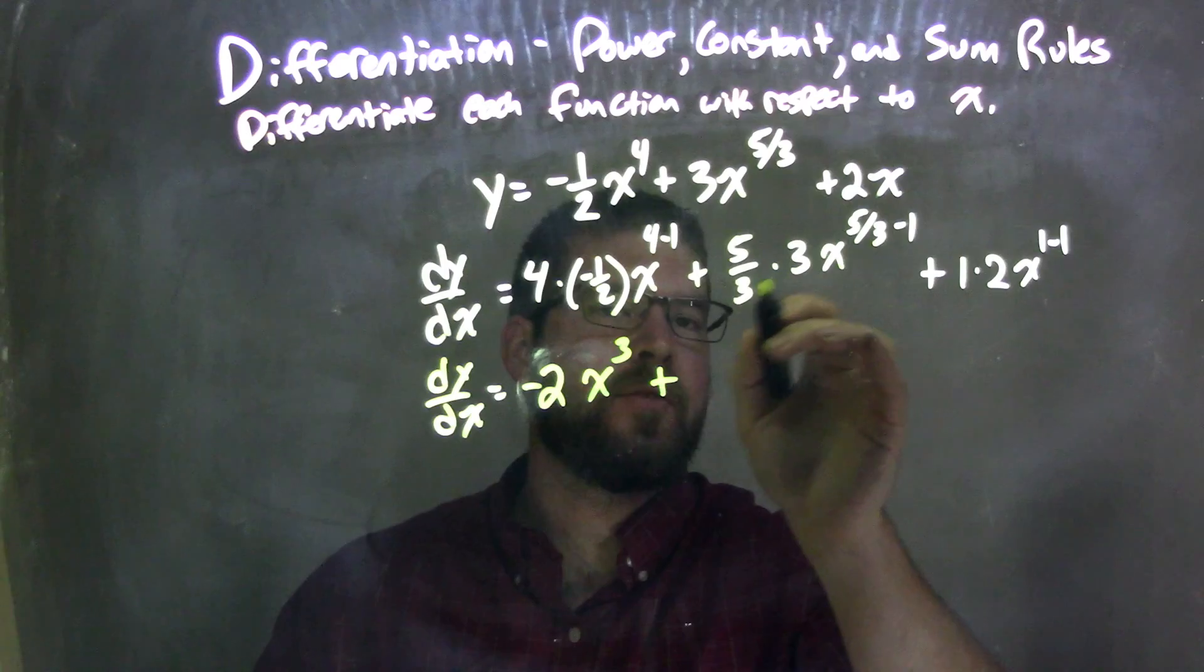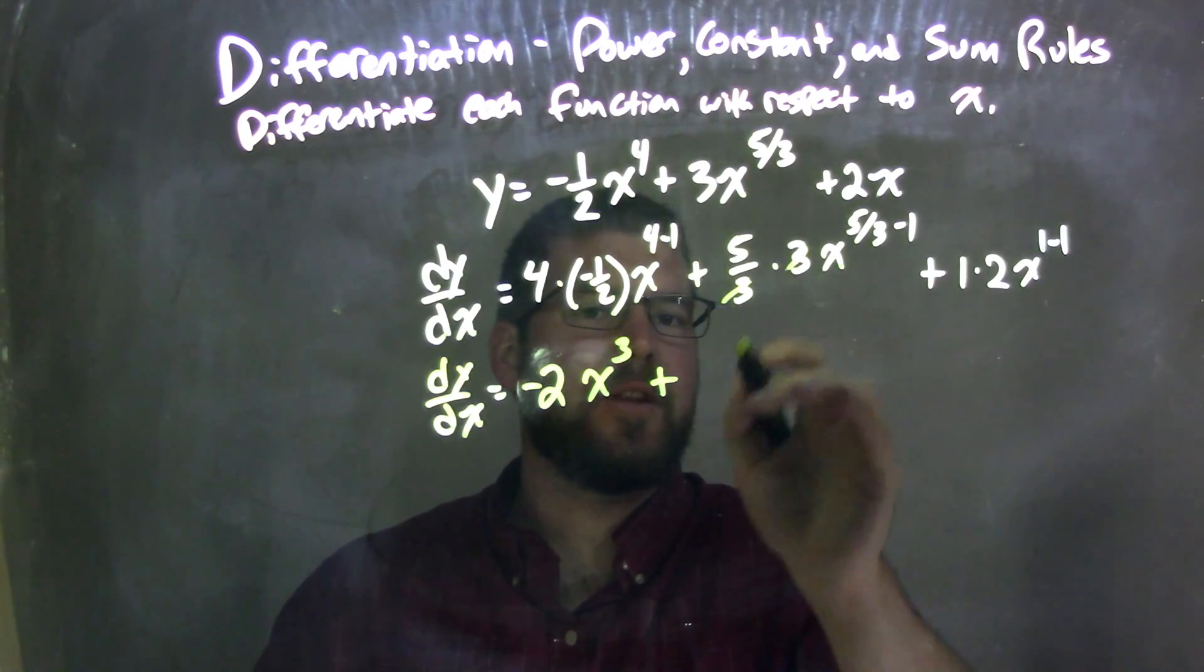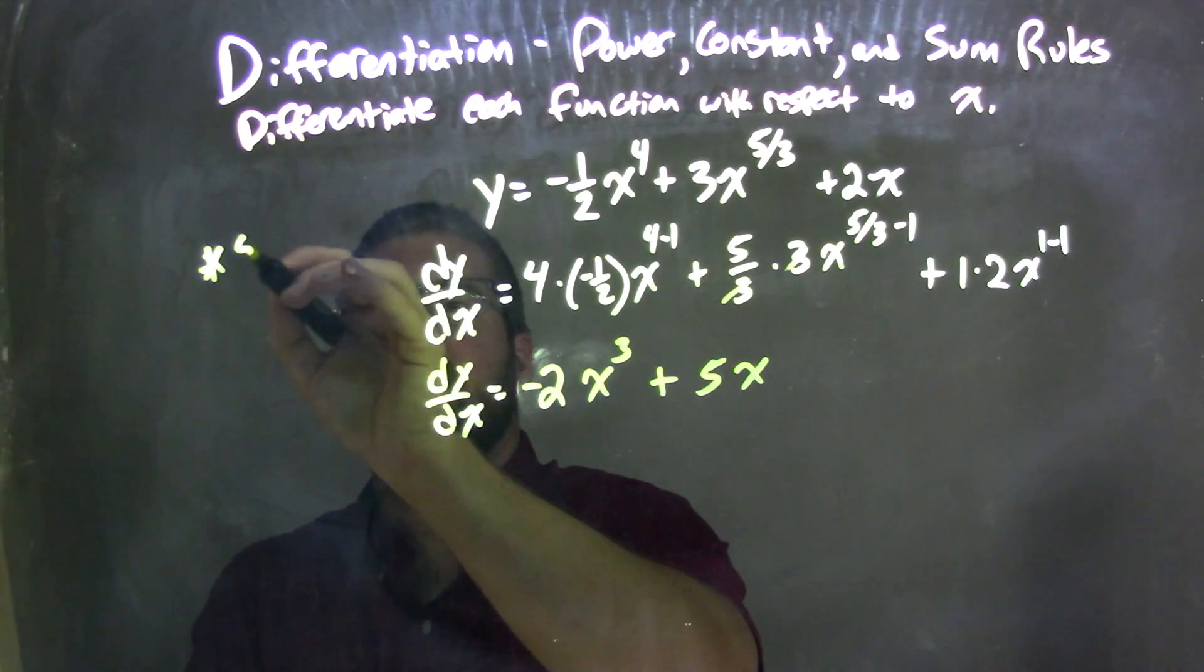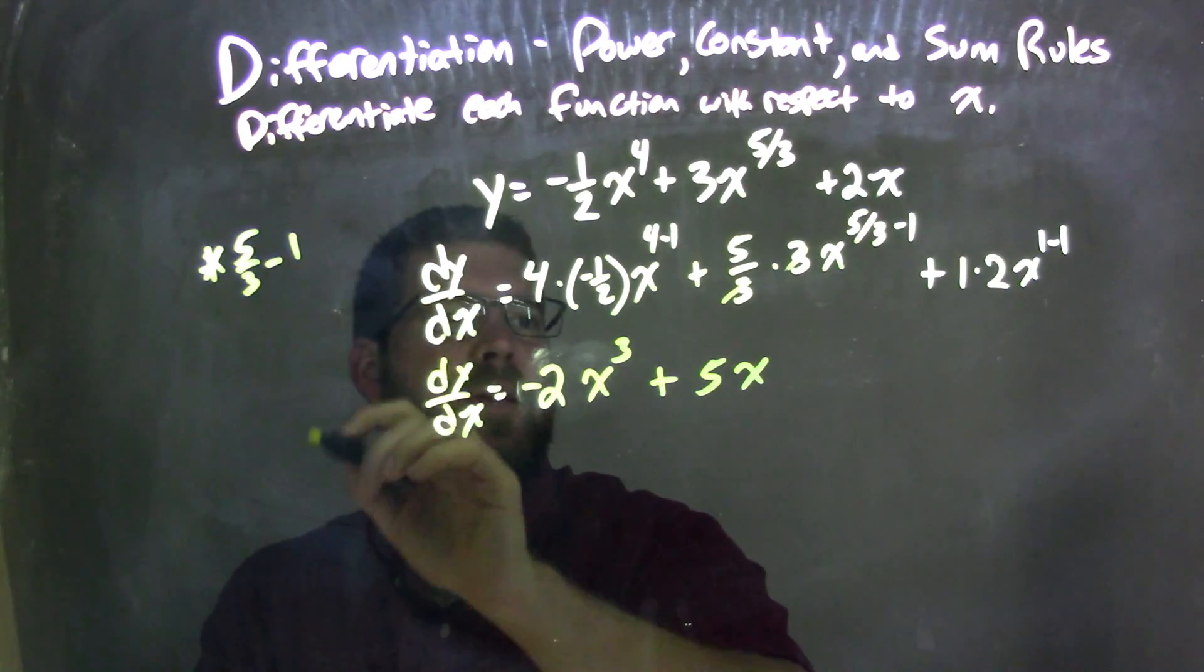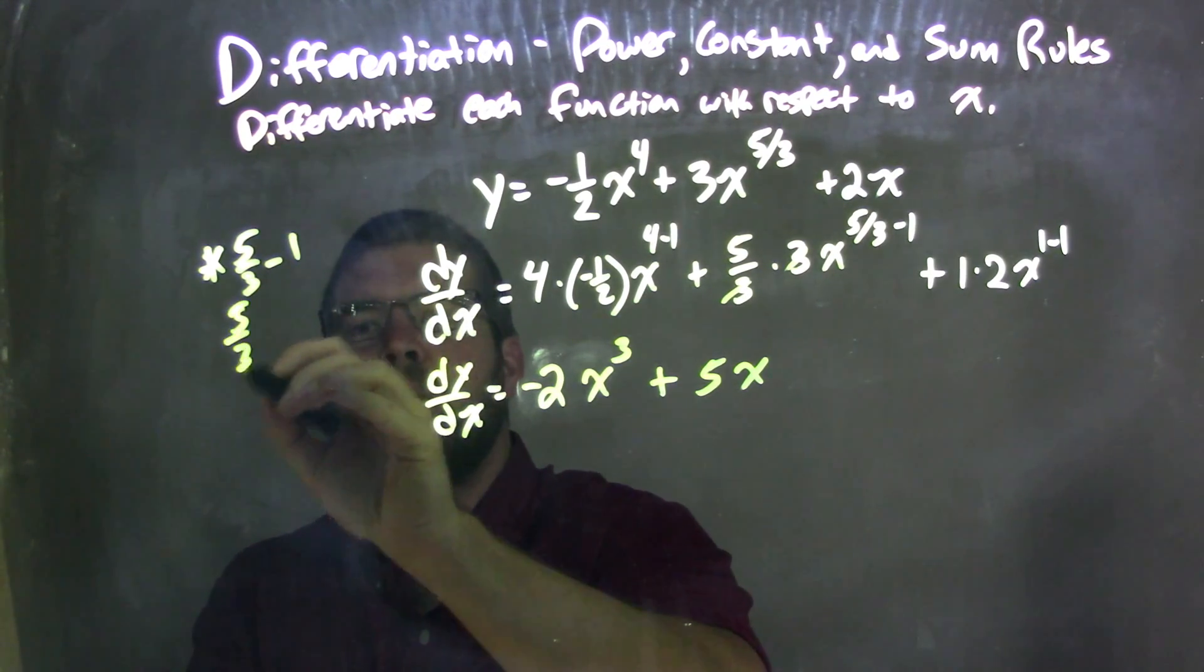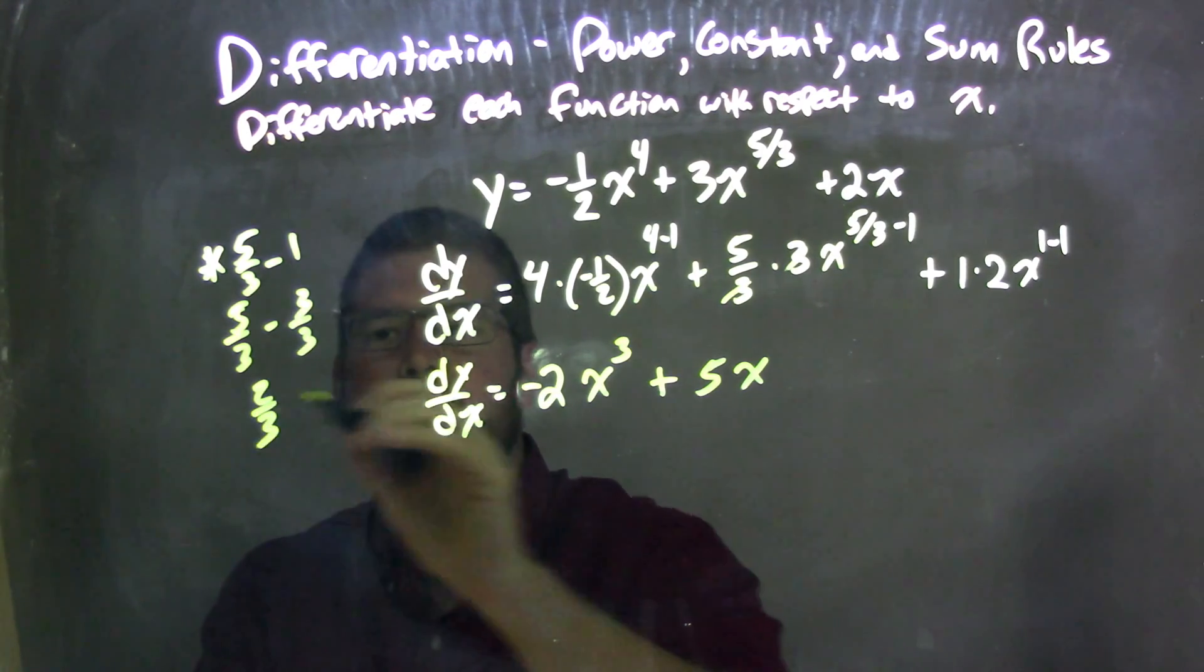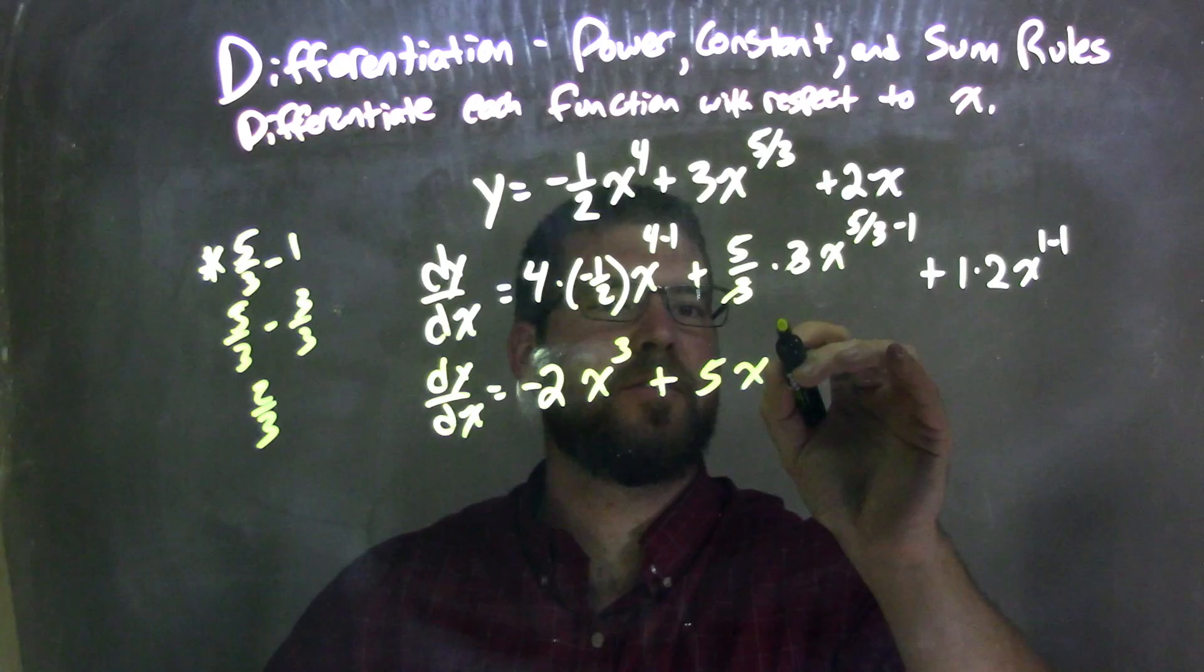Here, five-thirds times three, well, three's cancel, leaving which is a five, x. Now what's five-thirds minus one? Five-thirds minus three-thirds is two-thirds. So we have five x to the two-thirds power.